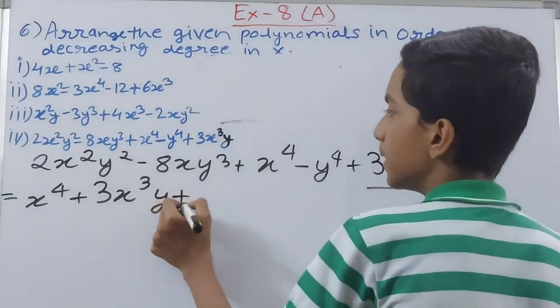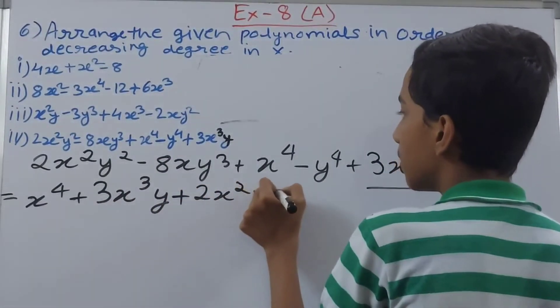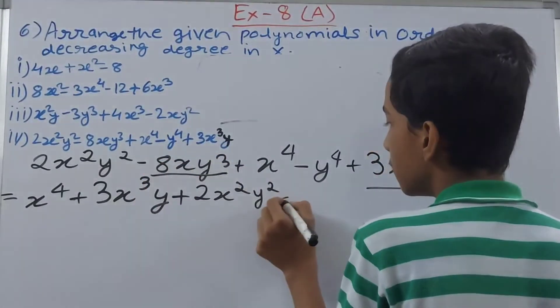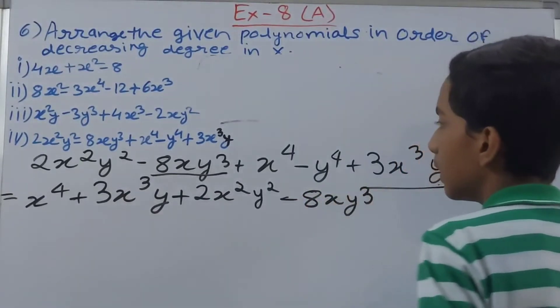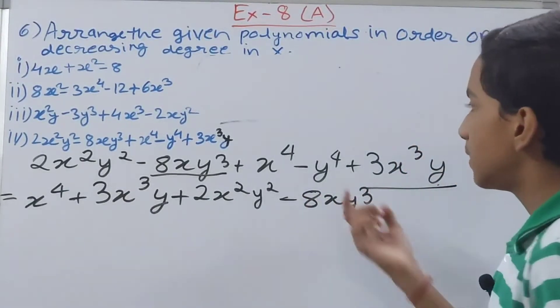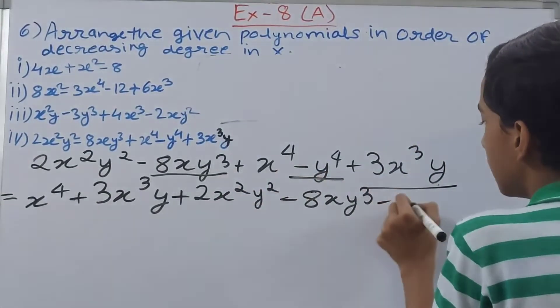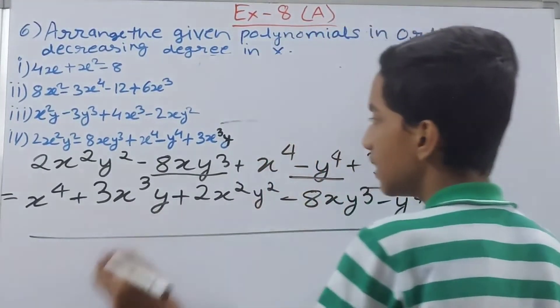And then in the last one, this x just a simple one, so minus 8xy cube. And now in the last we write the term which is not having x in it. This one, minus y to the power 4. And this is how we have rearranged it. So this has become our answer.